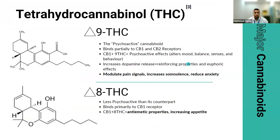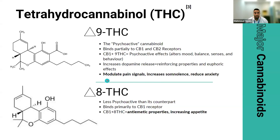One of the most common cannabinoids is tetrahydrocannabinol, or THC, which comes in two forms: delta-9-THC and the decarboxylated form, delta-8-THC. THC is labeled the psychoactive cannabinoid because it mainly binds to the CB1 receptor found mostly in the central nervous system, and can alter mood, balance, senses, and behavior. It is dopaminergic, increasing dopamine release, which is where reinforcing properties and euphoria come from. It does have clinical effects — it can modulate pain signals, increase somnolence, and reduce anxiety.